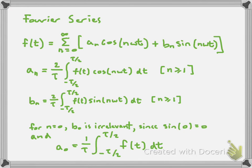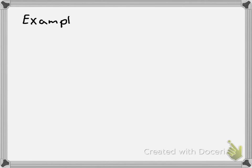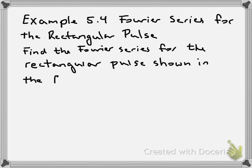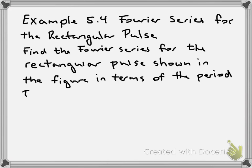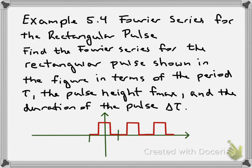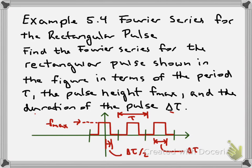Let's do an example — example 5.4 on Fourier series. We're going to find the Fourier series for a rectangular pulse shown in the figure, in terms of the period τ, the pulse height f_max, and the duration δτ. The figure shows the half-width δτ/2, the full pulse duration δτ, the height f_max, and the periodicity τ.